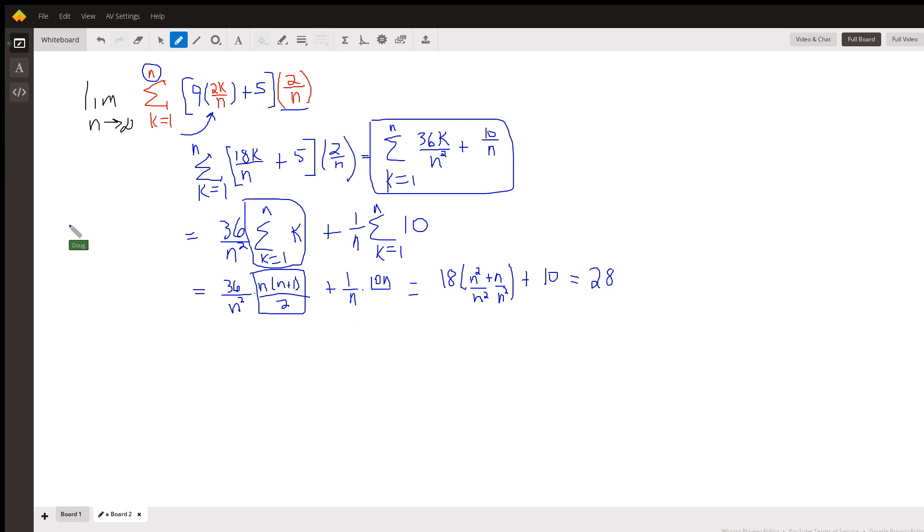Well, that's a well-known summation notation theorem, summation theorem that you can prove by mathematical induction, that the sum from k equals 1 to n of k is actually n times (n + 1) over 2. So if we simplify that, we get, picture distributing n times (n + 1) and then dividing each term by n squared.